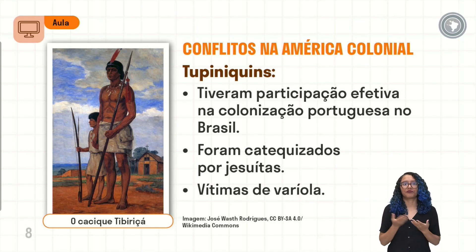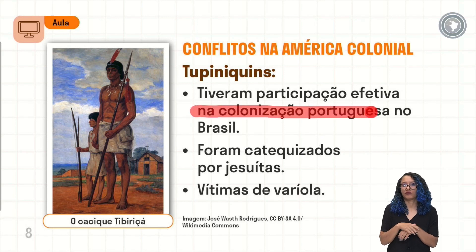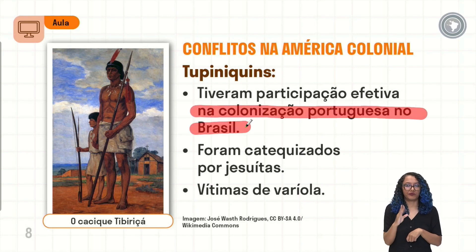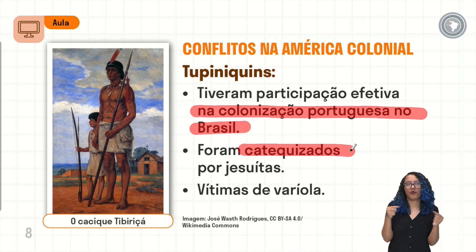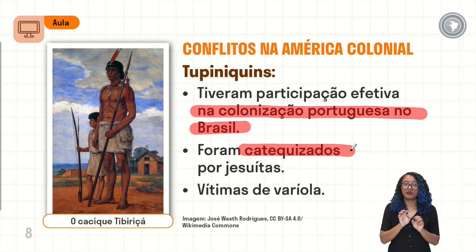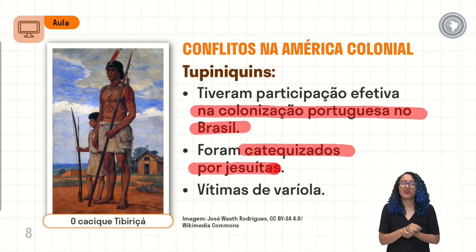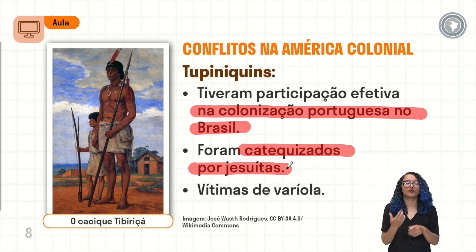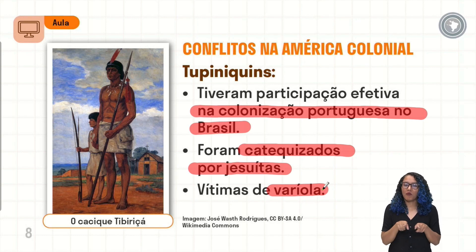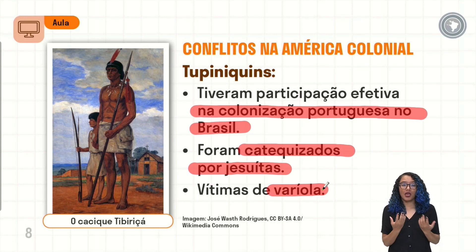Os tupiniquins tiveram participação efetiva na colonização portuguesa do Brasil. Eles foram catequizados — justamente aquele processo de aculturação em que vão absorver a cultura europeia, seja de forma pacífica ou mais violenta. Essa catequização vai ser trazida pelos jesuítas, que vão estar presentes nesse processo colonizatório. Há também a questão das doenças que foram trazidas para esses povos, como a varíola, que ocasionou a morte de muitos indígenas, pois eles não possuíam anticorpos nem imunidade para combater esta doença.